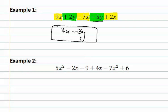In example two, you can see that some of the variables have exponents. Remember, the variable and the exponent must match in order to combine them. Therefore, we will start by highlighting all those with an X squared. We have 5X squared and a negative 7X squared.